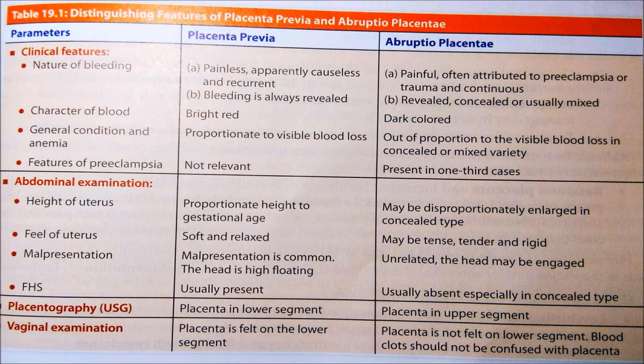On abdominal examination in placenta previa: uterine height is proportionate to gestational age, uterus is soft and relaxed, malpresentation is common, head is high and floating, and fetal heart sounds are usually present. In abruptio placentae: height is disproportionate, uterus is tense, tender and rigid, malpresentation is unrelated, head may be engaged, and fetal heart sounds are usually absent especially in the concealed type. On ultrasound, placenta is in the lower segment in previa and in the upper segment in abruptio. On vaginal examination, placenta is felt on the lower segment in previa but not in abruptio; blood clots should not be confused with the placenta.